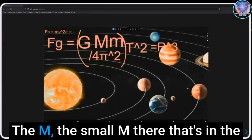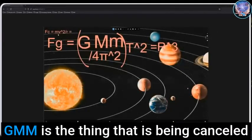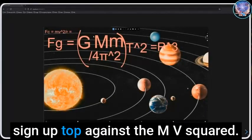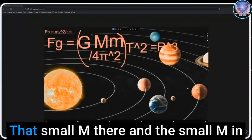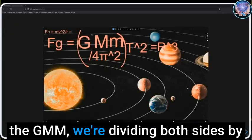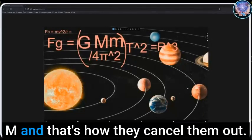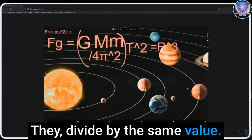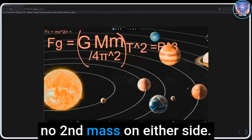Hey Alan, can you go back a frame just for mathematical clarity here? Because Shane was touching on it. The m, the small m there that's in the GMm, is the thing that is being canceled out on the other side of the equal sign up top against the mv². That small m and the small m in the GMm, we're dividing both sides by m and that's how they cancel them out.